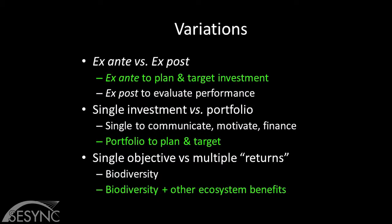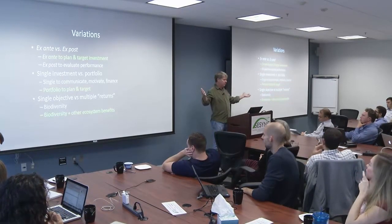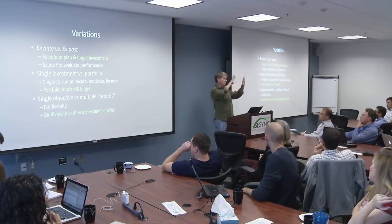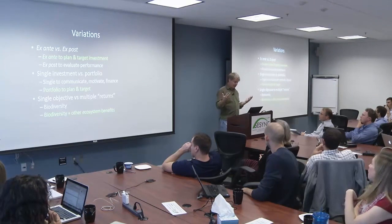Another question: I gave you the example of a single objective — biodiversity. But what's hot now is thinking about multiple returns, not just biodiversity, but what land should we protect if we also want carbon sequestration or other ecosystem benefits. And are we looking at a single one-off investment, or a portfolio of investments? Think about the Nature Conservancy: they've got a budget, how should they spend it across the landscape given that they care about biodiversity and other things?